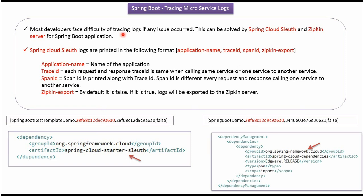Suppose we are working on multiple microservices and in one of the microservices an issue occurs — tracing the log is very difficult. To resolve this issue we have to use Spring Cloud Sleuth and Zipkin server for the Spring Boot application. In pom.xml we have to include the dependency of spring-cloud-starter-sleuth, and we have to include that dependency like this.